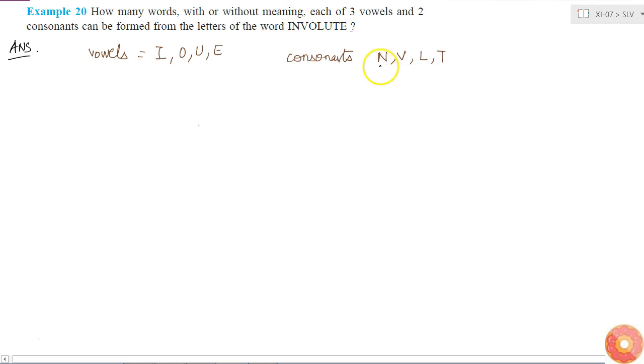These are the total eight letters divided into four vowels and four consonants. Now I need to form words having three vowels and two consonants. The different ways of getting three vowels from four vowels is 4C3.